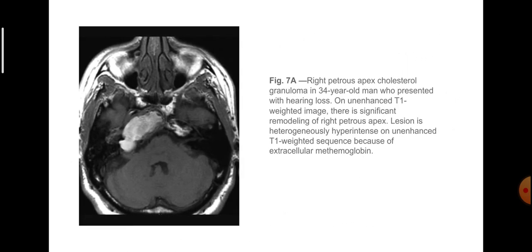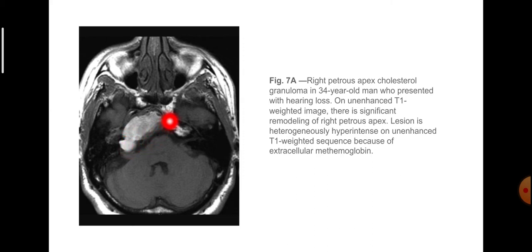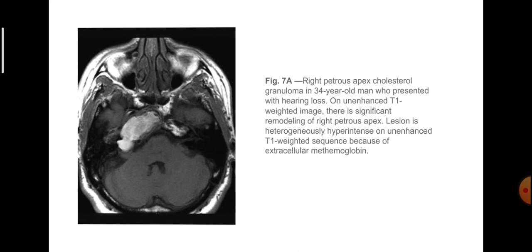This shows the right petrous apex cholesterol granuloma in a 35-year-old man who presented with hearing loss. On unenhanced T1-weighted image, there is significant remodeling of the right petrous apex. The lesion is heterogeneously hyperintense on unenhanced T1-weighted sequence because of extracellular methemoglobin.